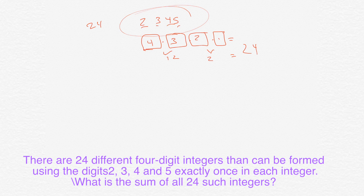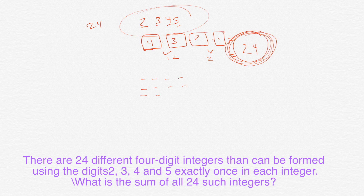And now what we want to do — it's kind of a daunting task — we want to add up all those 24 permutations, which is not going to be easy. So let's do it. There are going to be 24 different numbers, and we're going to add all 24 of them up. We don't want to do it one by one because that'll take a long time.